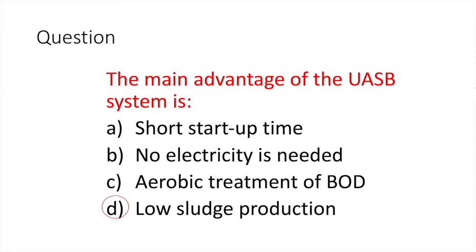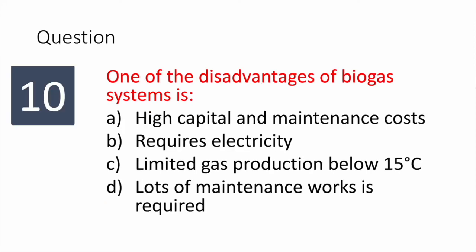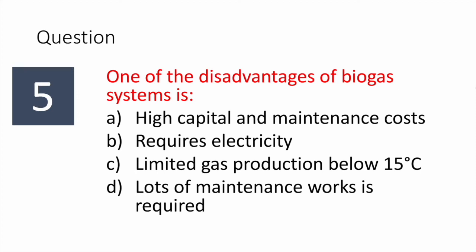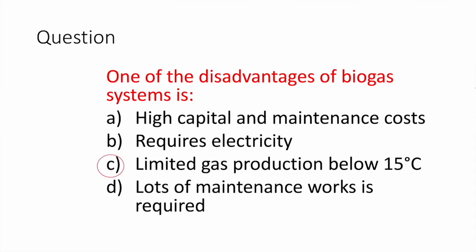It is mainly the low sludge production that is an advantage of certain systems. One of the disadvantages of biogas systems is the limited gas production below 15 degrees Celsius.